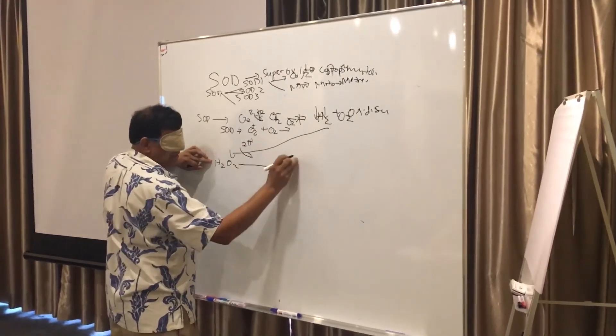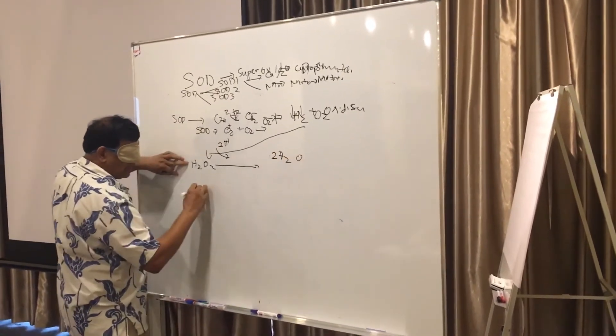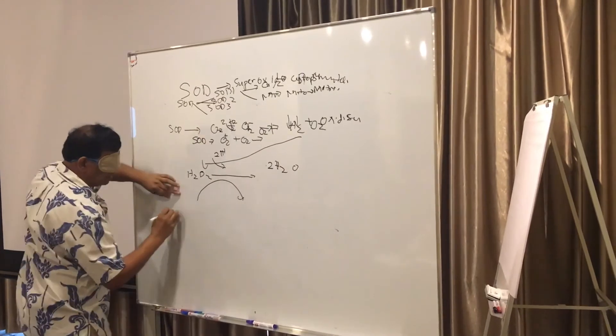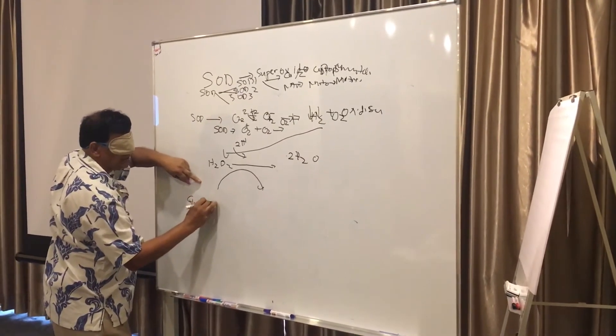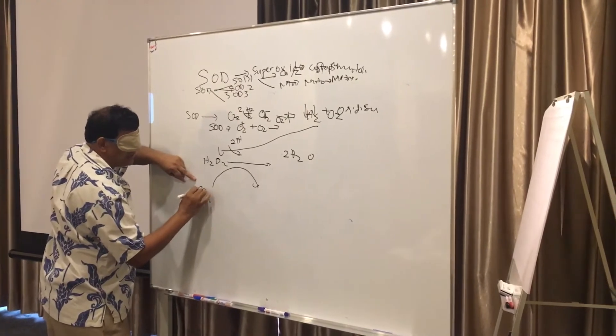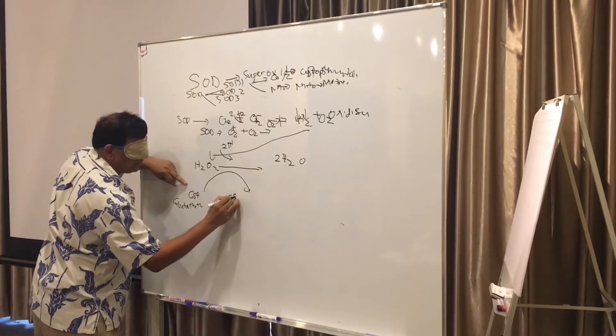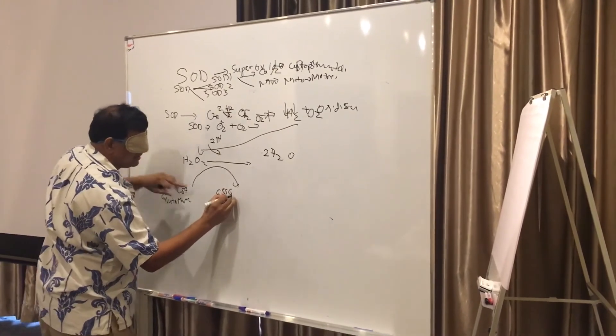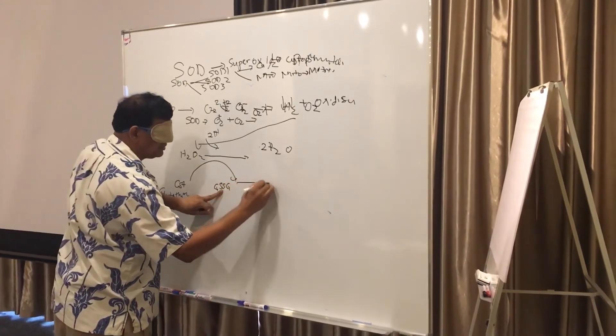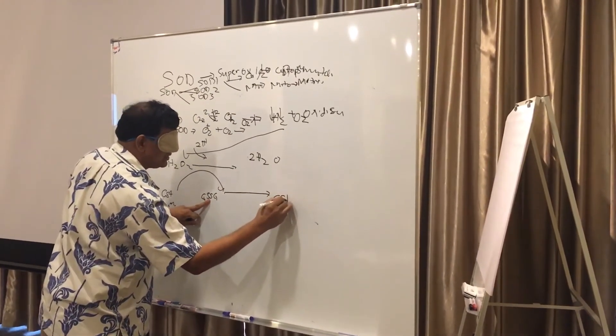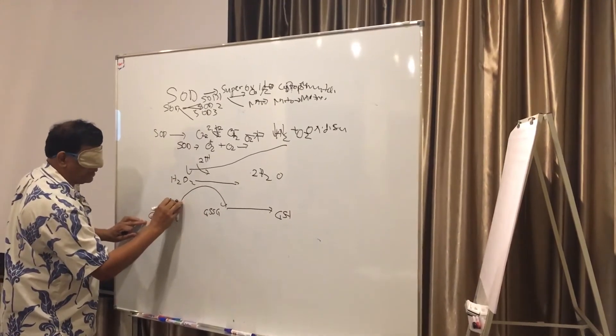And it requires glutathione, the glutathione here with GSH, and it will convert you to a reduced form GSSG. GSSG has to be reduced to GSH, but here it requires glutathione peroxidase.